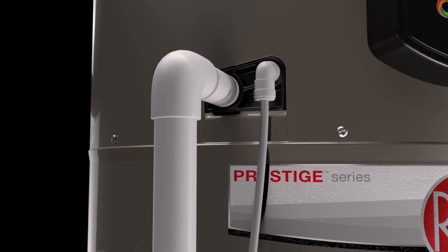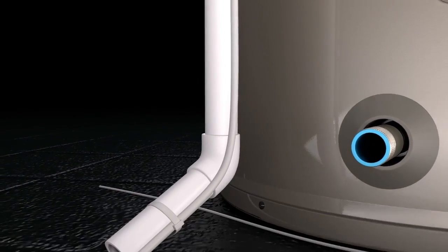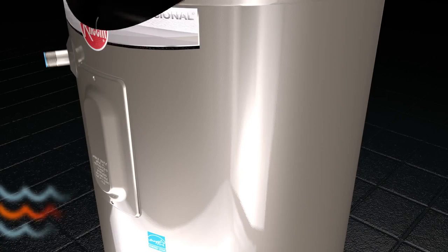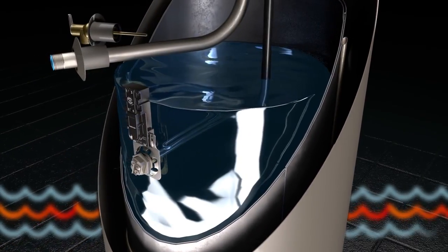The condensate drain connection routes the condensate created during the water heating process away from the unit. The electric elements are accessible on the front of the unit in an upper and lower location.